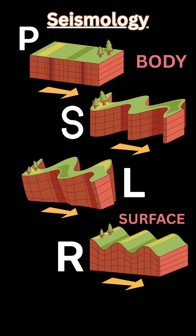The first wave is the P wave, which stands for primary. It's a body wave that goes through all the layers of the Earth, both the outer core and inner core. It travels through liquids and solids at different densities and changes speed based on density — the higher the density, the faster the P wave moves. The P wave ranges between 6 to 8 kilometers per second and moves in a linear or compressional propagation.